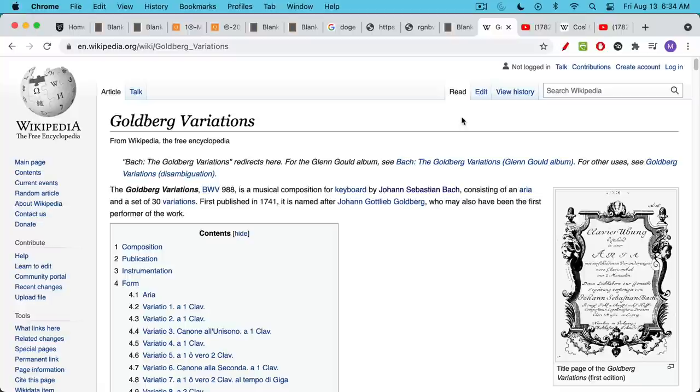The first example is Bach's Goldberg Variations, which were published just nine years before he died. This is a composition that was written for keyboard by J.S. Bach, Johann Sebastian Bach. And it consists of basically a theme followed by 30 variations. The theme is called an aria. And I'm not sure where Bach took it from or whether he composed it himself.